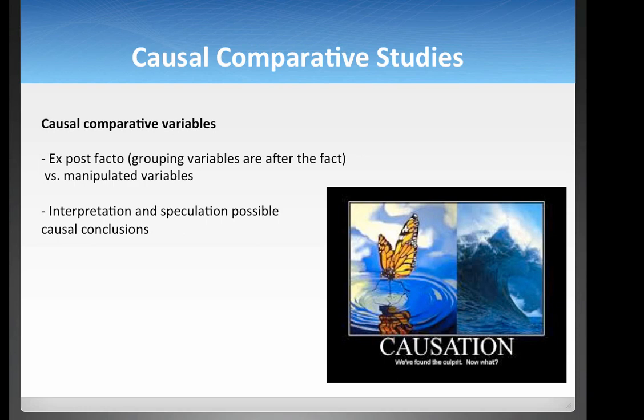They use ex post facto variables — grouping variables that happen after the fact. We use these variations or these different groups to speculate about causal relationships. But it's always a speculation and not a true causation like we achieve with experiments.